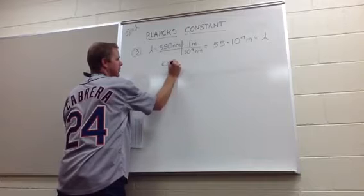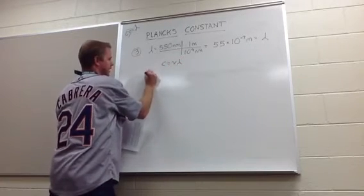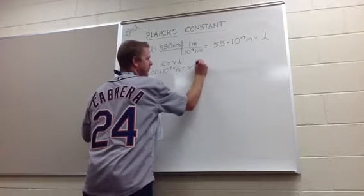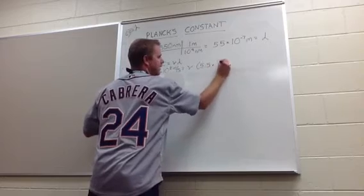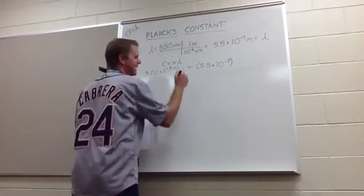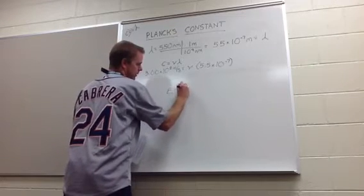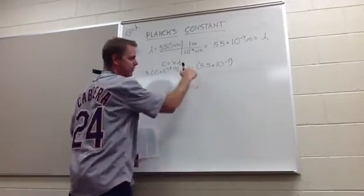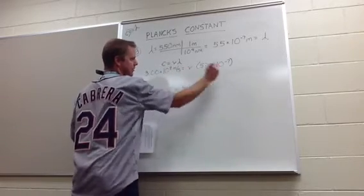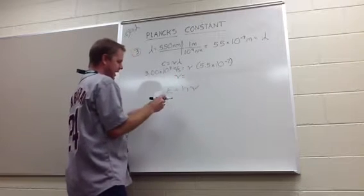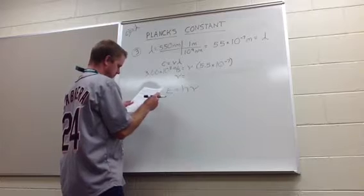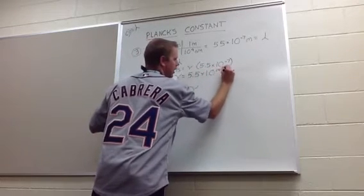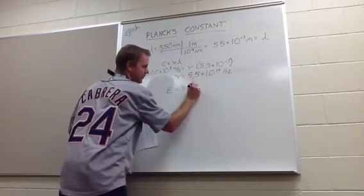Now, C equals frequency times wavelength. C is a constant: 3.00 times 10 to the 8th meters per second equals the frequency times 5.5 times 10 to the negative 7. Why do I have to do that? Because E equals HV requires you to have the frequency, but you are given a wavelength. So you've got to solve for frequency here to put it in there. When you divide both sides by 5.5 times 10 to the negative 7, you get 5.5 times 10 to the 14th hertz. That gets plugged into E = HV.